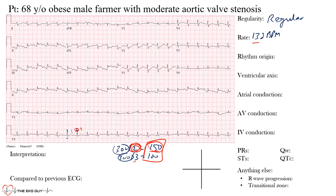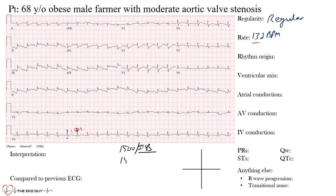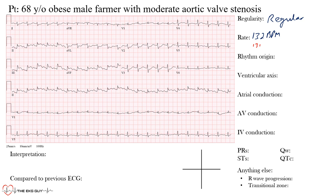We estimated 132 from the first method, which is closer to 150 than 100. For faster rhythms, instead of using 300 you can use 1500 divided by the number of small boxes between R waves — about 12 small boxes here — to be a little more accurate. This division approach can only be used for regular rhythms.